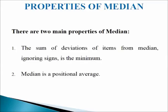the median of 4, 6, 8, 10, 12 is 8. Now deviations from 8, ignoring signs, are 4, 2, 0, 2, and 4. The total of these deviations is 12.